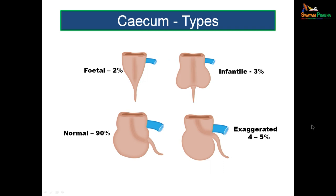There are four types of cecum. The fetal cecum, found in 2% of the population, is cone-shaped with the appendix attached to the tip. Infantile cecum, found in 3%, is quadrate with a depression at the bottom where the appendix attaches. The most common is the adult type, where the right saccule is larger and the appendix is about 2 centimeters below the ileum. The exaggerated type, found in 4–5%, has the maximum right saccule with the left obliterated.